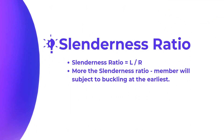Let's move on to the slenderness ratio. It is nothing but a measure of the slenderness of a particular member. It is dimensionless, and it is defined as the ratio of the effective length of a member to its radius of gyration. From this equation, it is evident that if the member length is more, then the member will be more slender. More slender means more buckling.